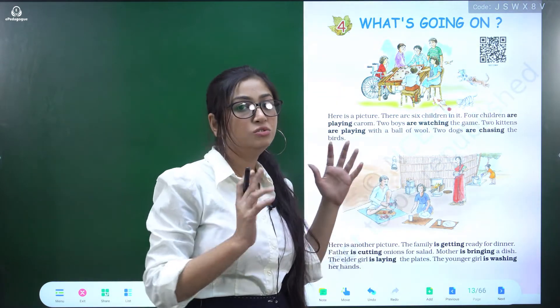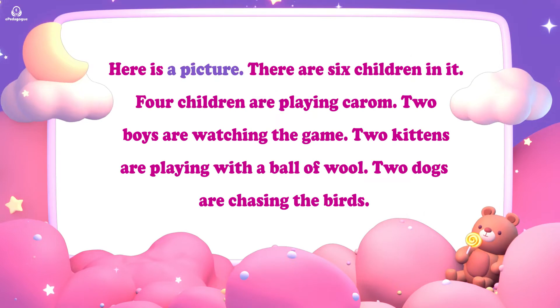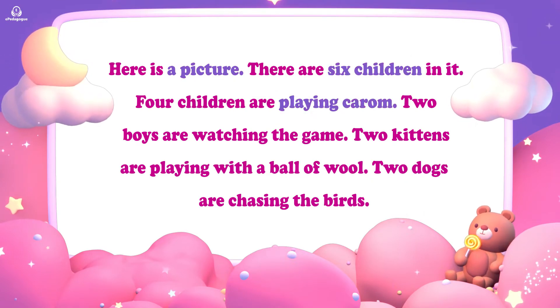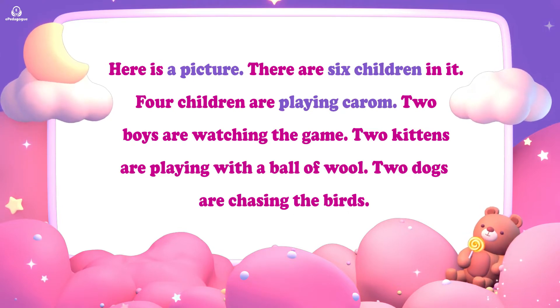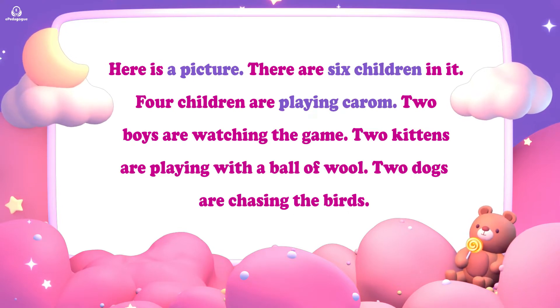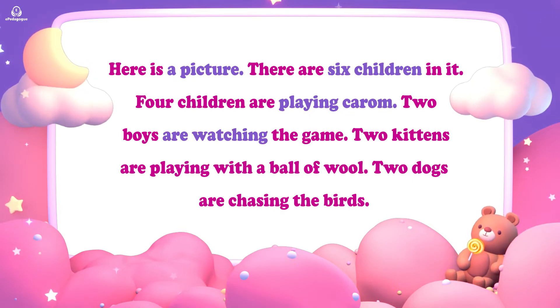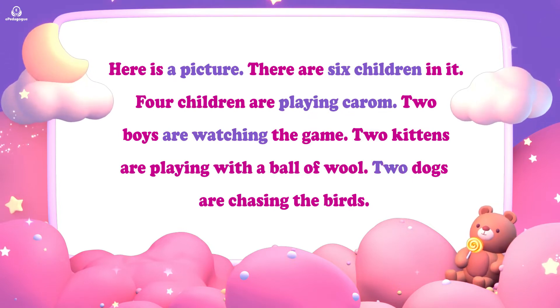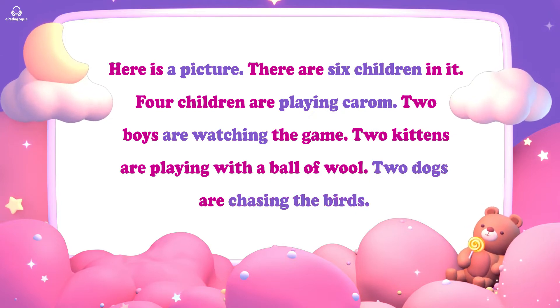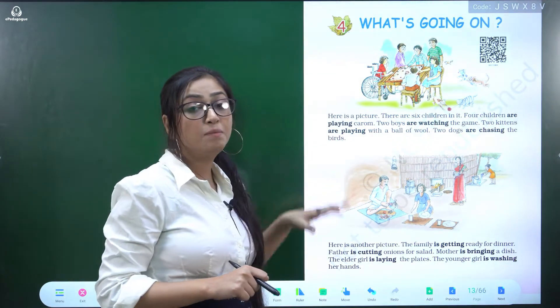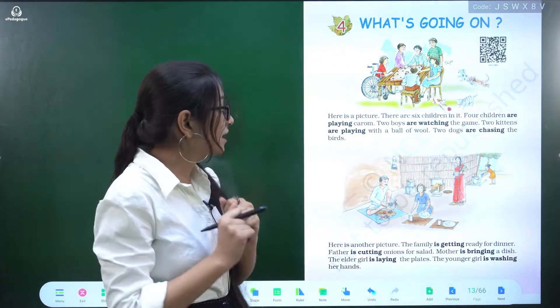Let's discuss the chapter. Here is a picture. There are six children in it. Four children are playing carom, two boys are watching the game, two kittens are playing with a ball of wool, and two dogs are chasing the birds.